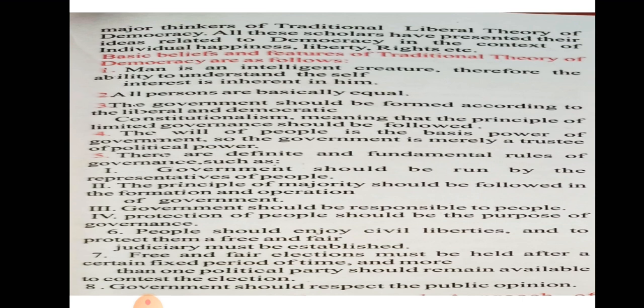Now we will read about the basic beliefs and features of traditional theory of democracy. Feature one: Man is an intelligent creature, therefore the ability to understand self-interest is inherent in him. Kya bola gaya hai ki man jo hai, intelligent creature hai, ek aisa creature hai jo ki buddhimaan hai. Aur uski ability jo khud ko samajhne ki hai, wo uske andar khud se pehle hi hai — jaise genes inherent hote hain, usi tarike se insaan ek intelligent creature hai jiske andar ye power hai ki woh khud ko samajh sake aur khud ke interest ko jaane.